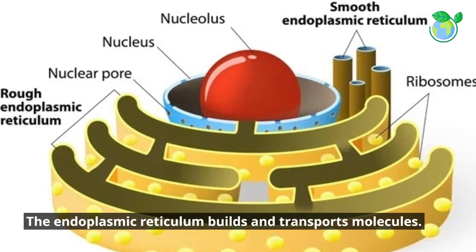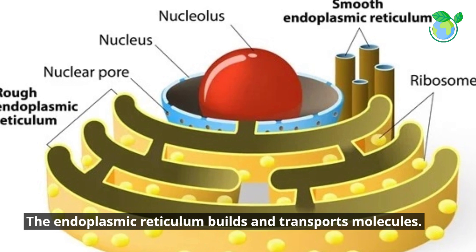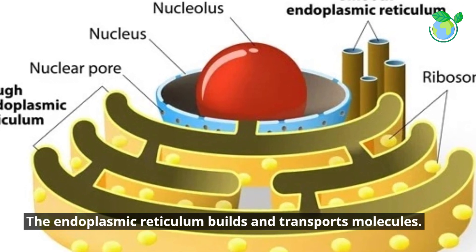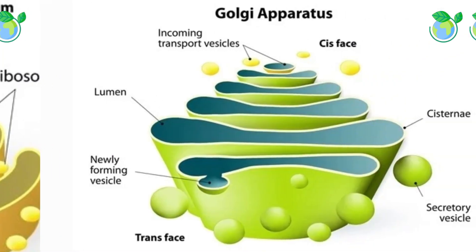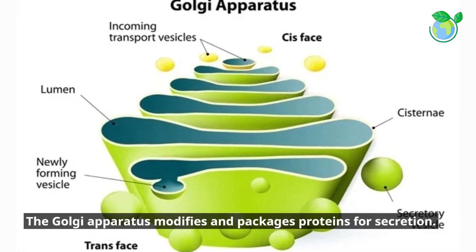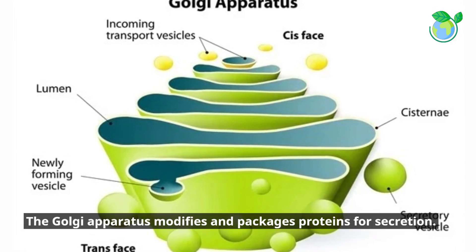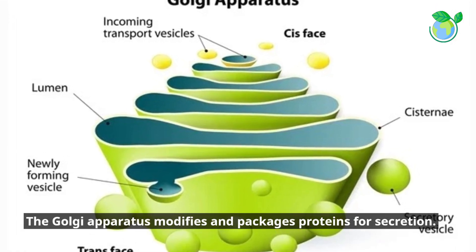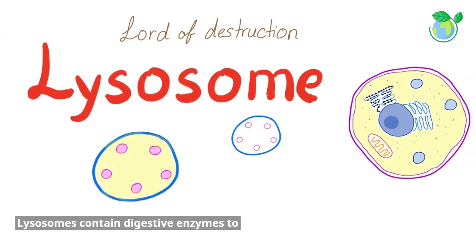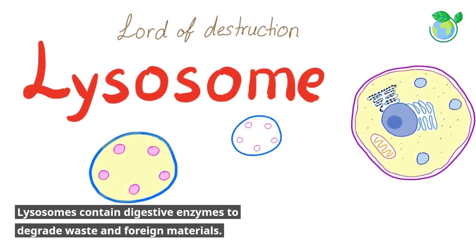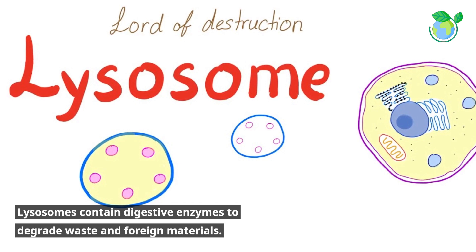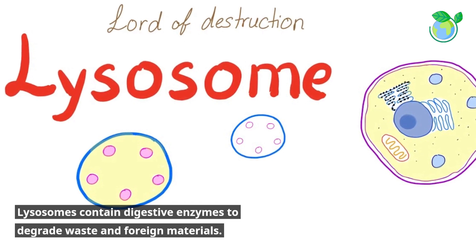The endoplasmic reticulum builds and transports molecules. The Golgi apparatus modifies and packages proteins for secretion. Lysosomes contain digestive enzymes to degrade waste and foreign materials.